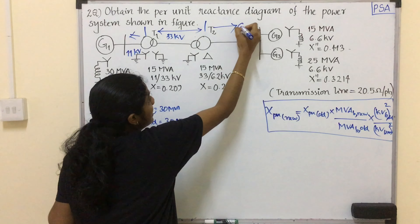For T2: MVA base new is 30 and MVA base old is 15. KV base old is 33 and KV base new is 33. The X per unit old value will change — it is 0.22. So for the new per unit, substituting: 0.22 multiplied by 2 which is equal to 0.44 per unit.